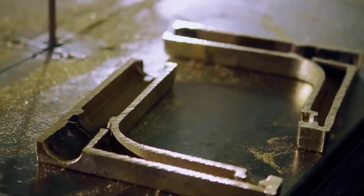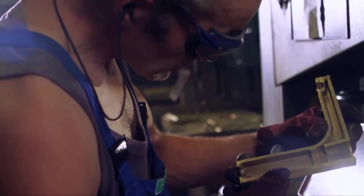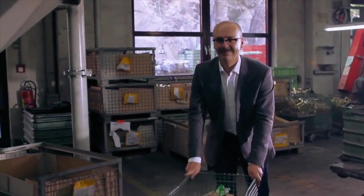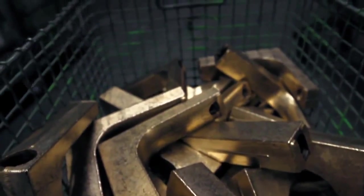An employee conducts random sample tests to check the quality. The casting blank is then taken to the next manufacturing stage, where it's thoroughly treated: the surface processing department.